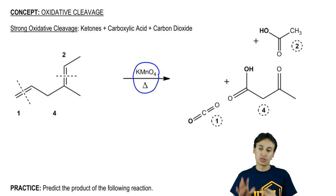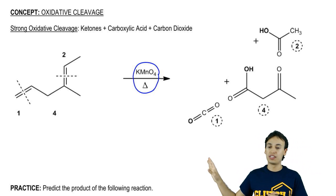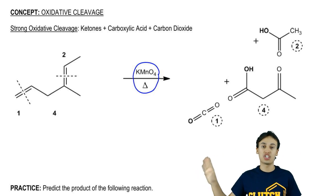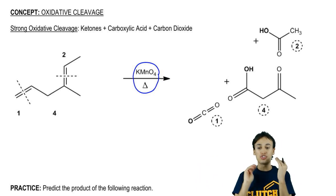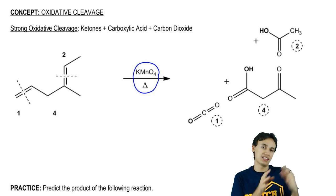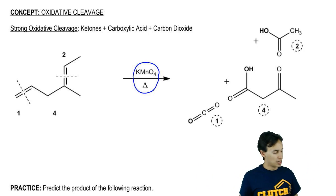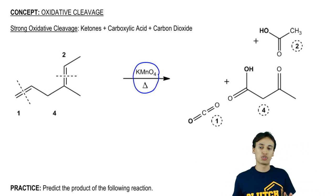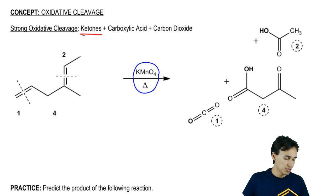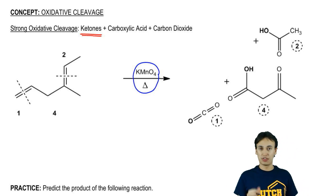So what we're going to do is take this example. Notice that I have this seven carbon chain. I'm going to split it in two areas and we're going to inspect each part of it and see what happened. It's important to realize that you're going to get three different types of products when you react with strong oxidative cleavage, and you're going to see exactly why you get each one.